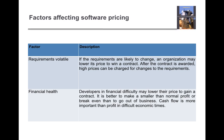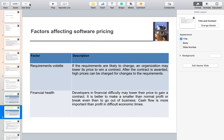The fifth factor is financial health. A developer in financial difficulty may lower their price to gain a contract. However, it is better to make a smaller-than-normal profit than to go out of business, because cash flow is more important than profit in difficult economic times. Instead of quoting low, getting the project, and then facing a financial crisis, the developer should maintain a nominal profit and keep cash flow stable.